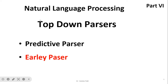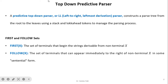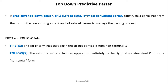Welcome to this video on top-down parsers. This is the sixth video on this topic and in this video I am going to explain the predictive parser. A predictive top-down parser, or LL parser, constructs a parse tree from the root to the leaves using a stack and look-ahead tokens to manage the parsing process. When using a top-down predictive parser, we first need to find the first and follow sets from a given grammar.